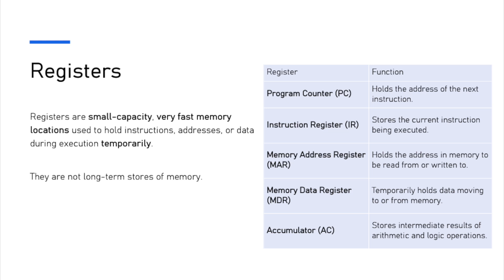The instruction register stores the current instruction being executed. So when you go to the first address — 1001 in RAM — it might have an input command, and you then take that command and store it in the instruction register. For that storage to happen, two other registers come into play. The memory address register (MAR) holds the address in memory to be read from or written to, and the memory data register (MDR) temporarily holds data moving in and out of memory. So one holds the memory address location and the other holds the data to be read from or written to.